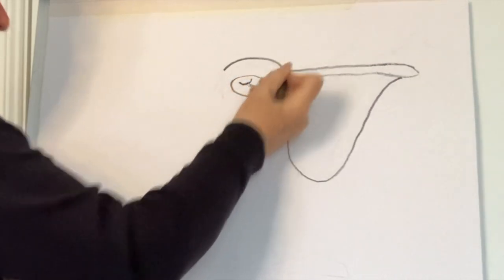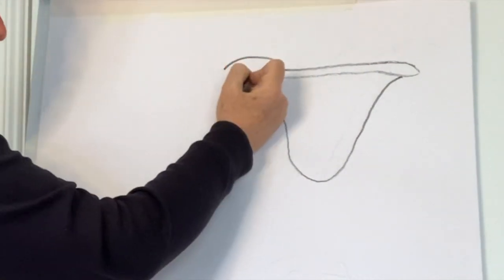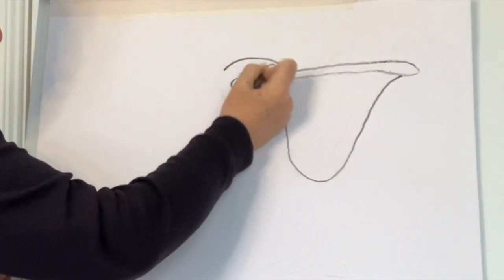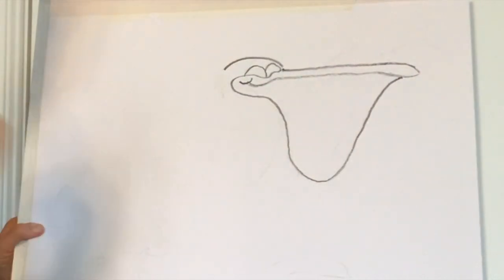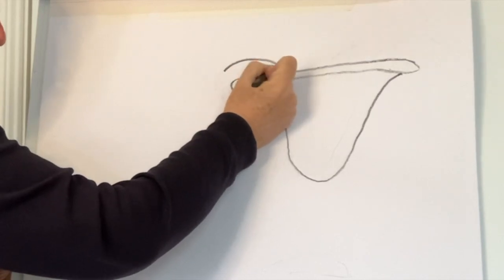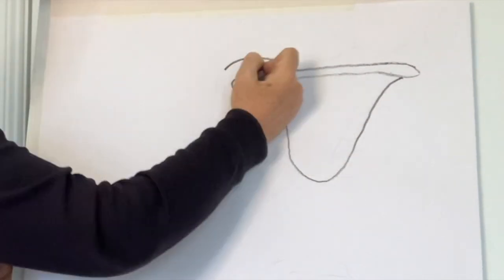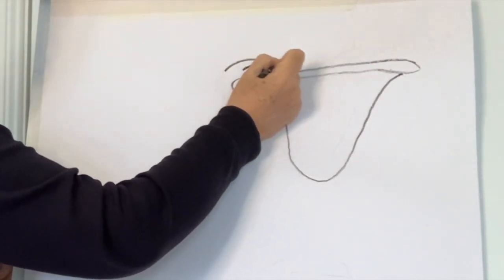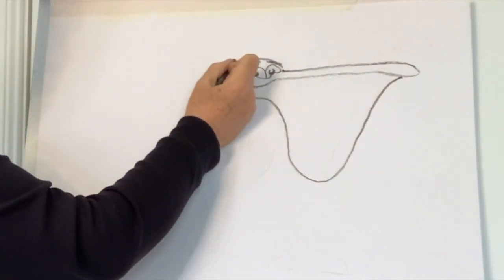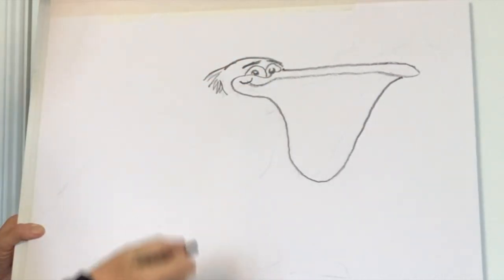And there we have it. Now the eyes, again just think of sort of egg shapes like this. You don't have to draw the complete egg shape, but just have that in your mind. Then the pupils are like two little black grapes like that. Now I'll give the pelican some nice eyebrows. During the breeding season they kind of have what looks like a little crest coming out like that.